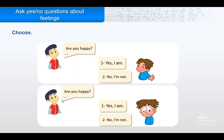Now choose — look at the child's face and answer the question. The first question: are you happy? Choose one: yes, I am, or no, I am not. Look at the boy's face and answer — are you happy? Yes, I am, because he is happy. Very good!